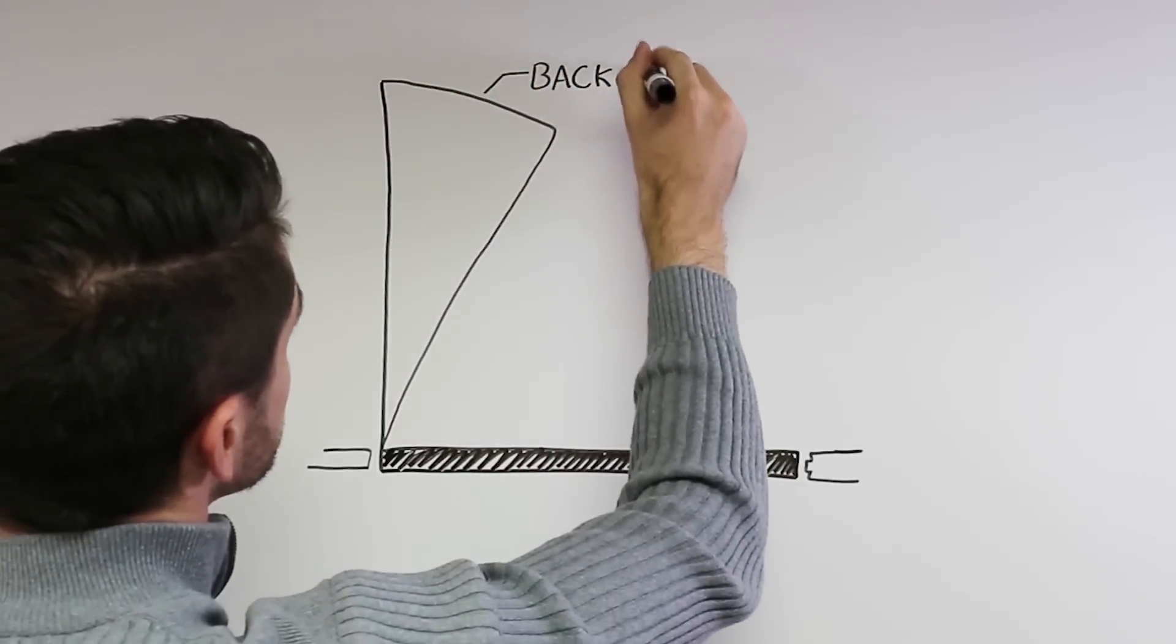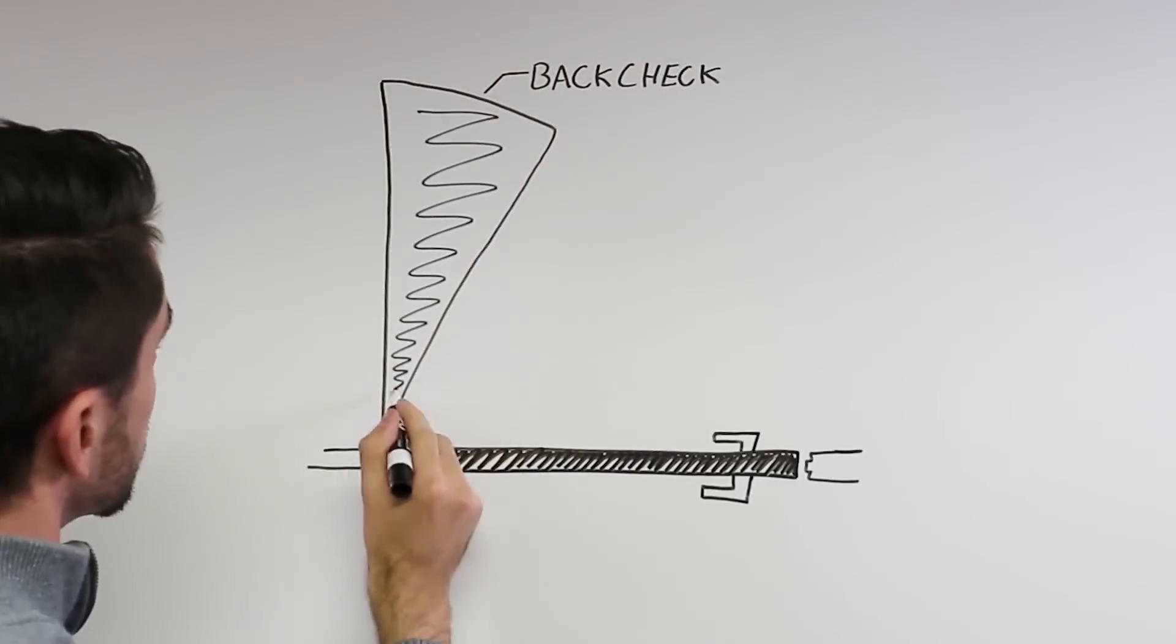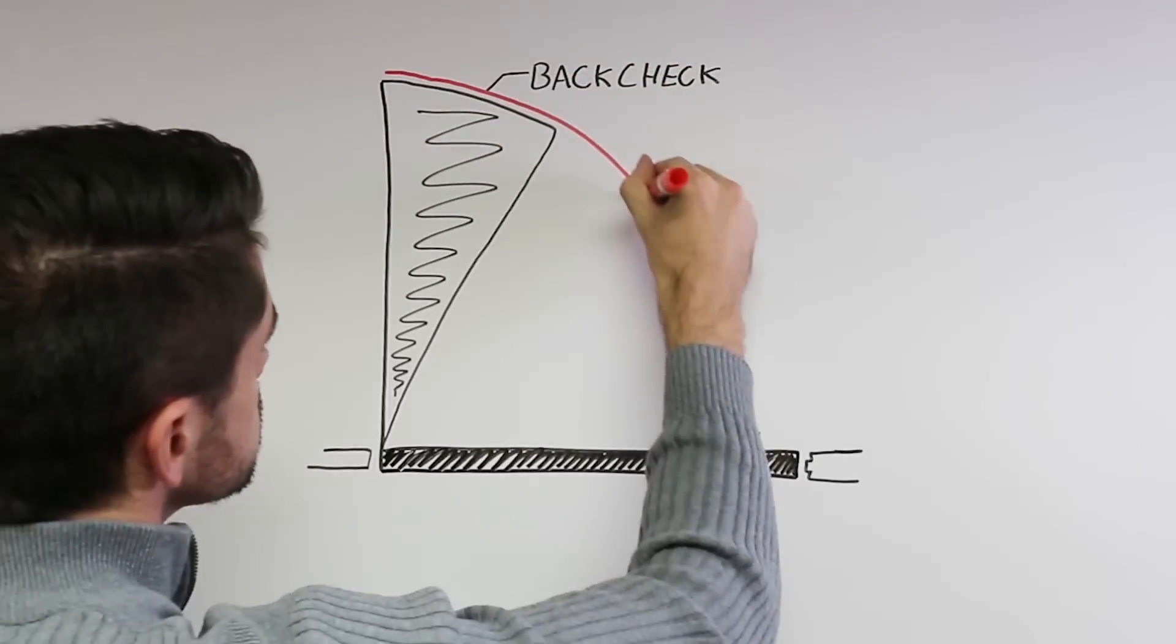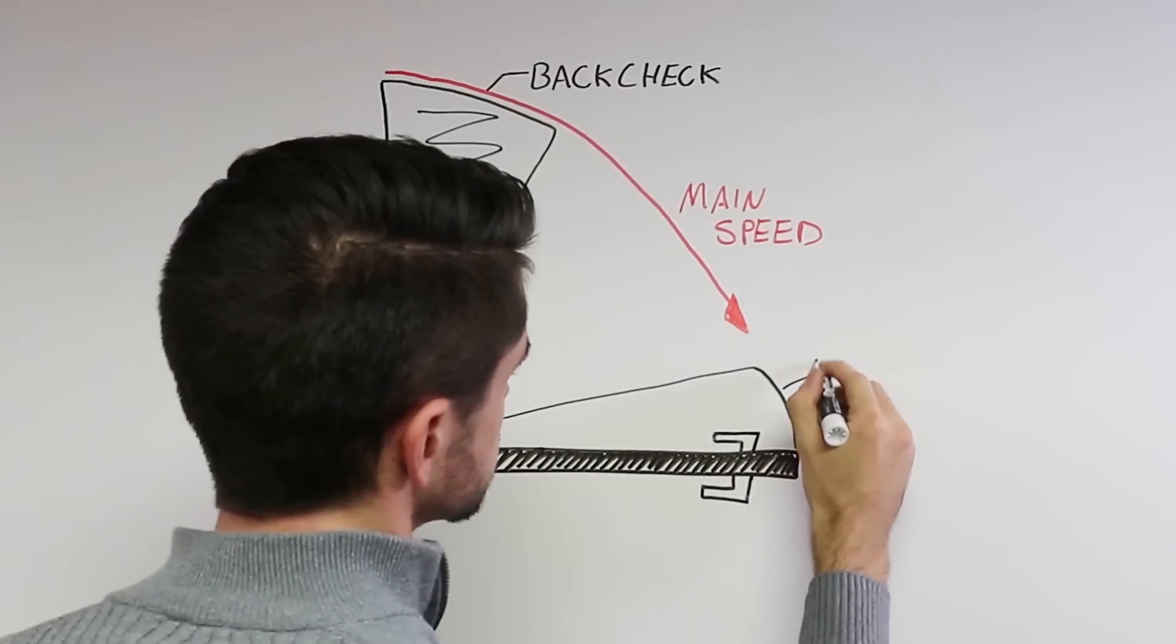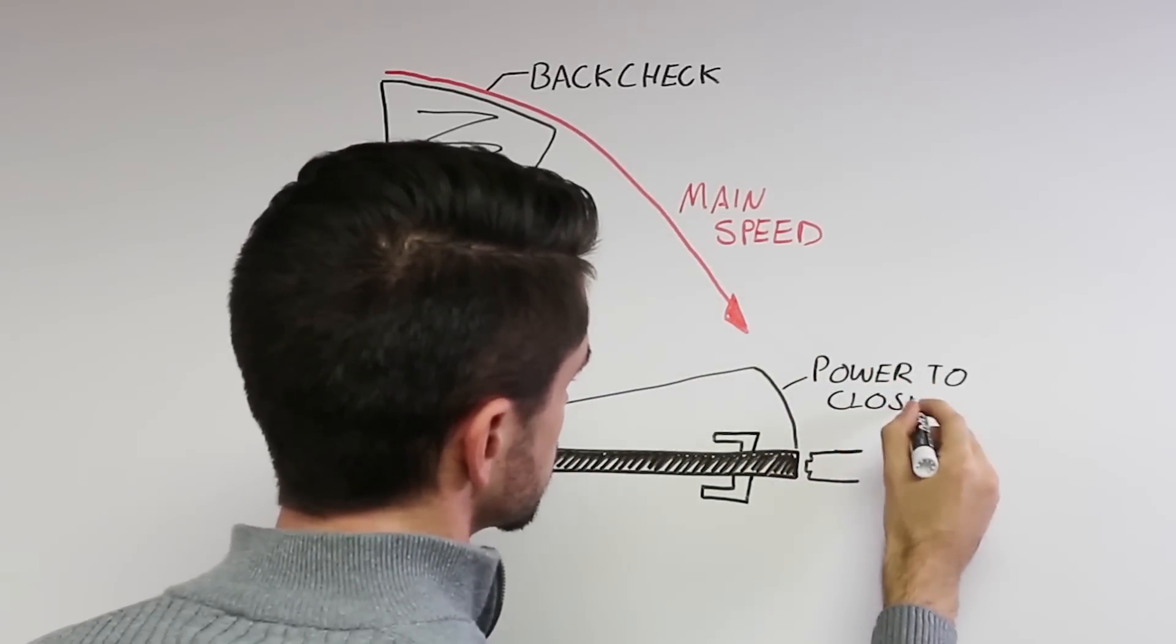Closers slow the opening speed of the door as it approaches a fully open position. Closers control the closing speed of the door from its fully open position until a few degrees of its latched position. And closers provide the power to close the door.